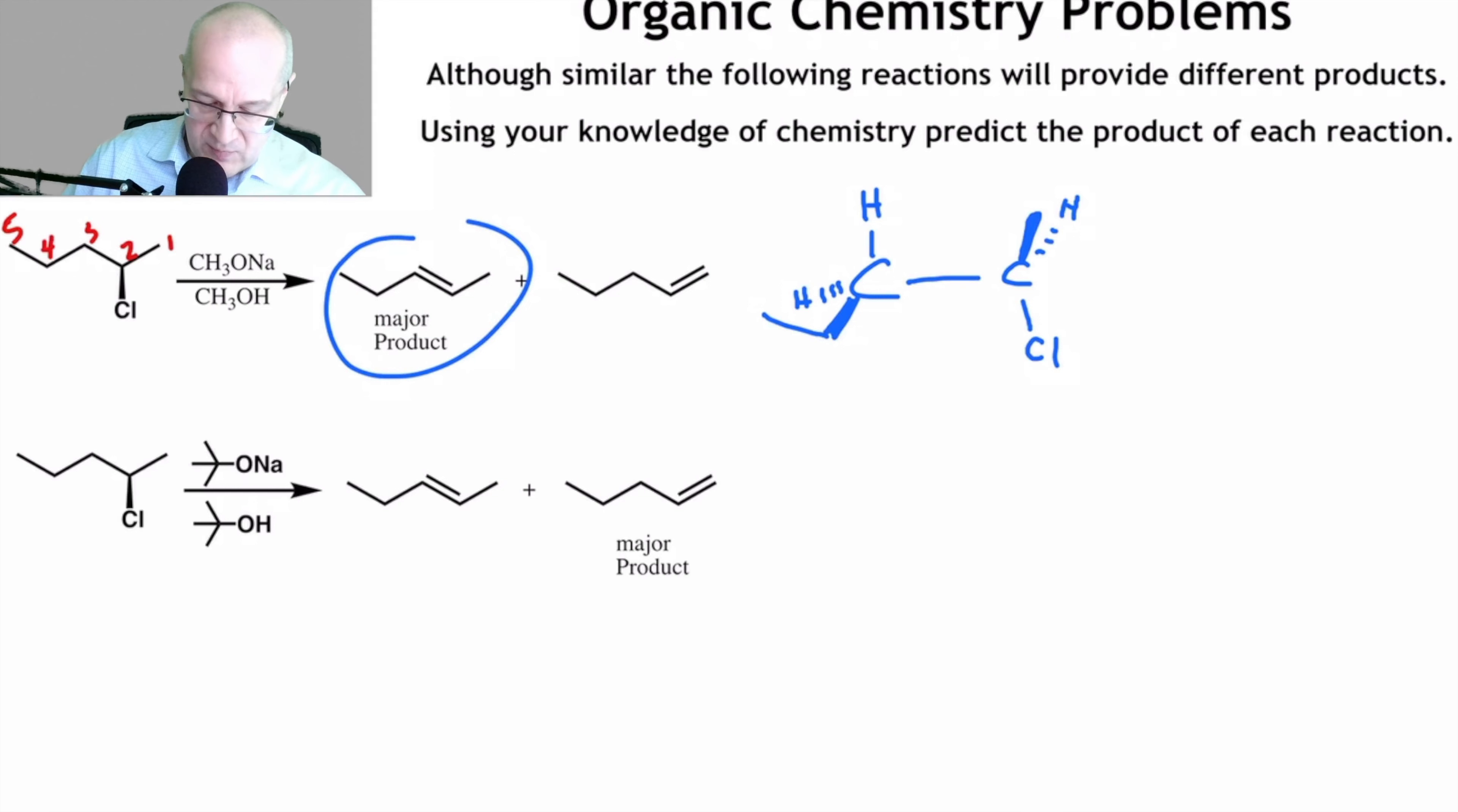Now let's set it up so we have an anti-coplanar to give us this product here. So let's number the carbons: one, two, three, four, and five. So let's make this one red. Carbon, carbon. Let's put the chlorine there. Hydrogen here. There we go. So this hydrogen and this chlorine are anti-coplanar now.